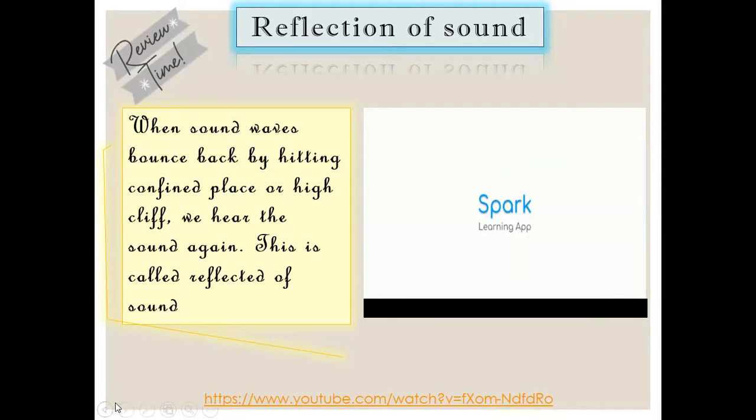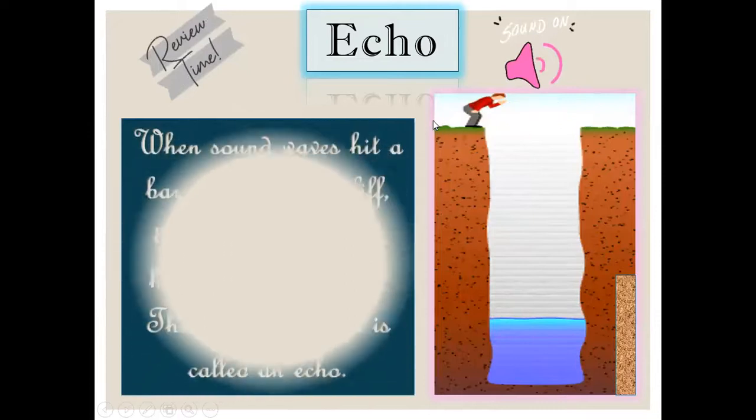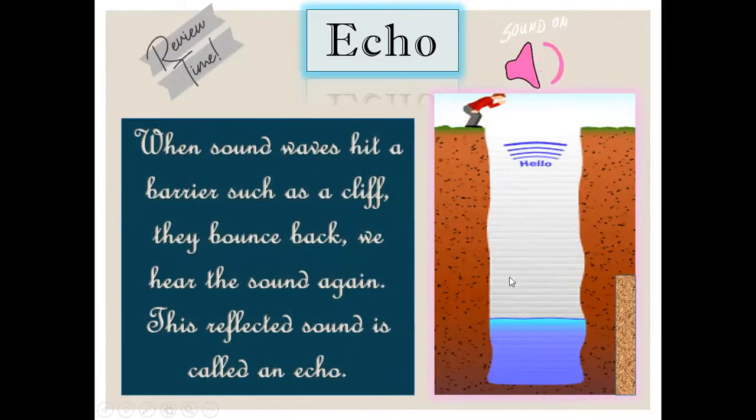Now you can see that the reflection of the sound may vary. It will always have the angle of incidence and angle of reflection be the same. Then you can hear the sound quite nicely. Now, what is echo? When the sound waves hit a barrier, such as a cliff or inside a well, they bounce back. We hear the sound again. This reflected sound is called an echo. Somewhere on high cliffs, there is always an echo location, echo point. So people are going there to just listen to the voice and how many voices are coming. That is an echo.